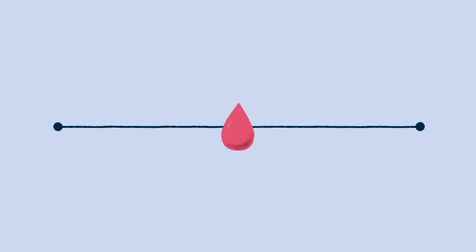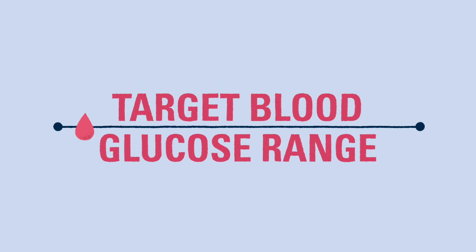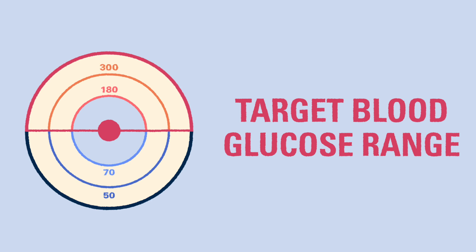Because blood glucose levels can change so much, we use a range of numbers that are healthy. This is called the target blood glucose range. You can think of the target blood glucose range like a dartboard. You aim for the target in the middle, but it's okay if you're a little off. The more time spent in the target range, the better.